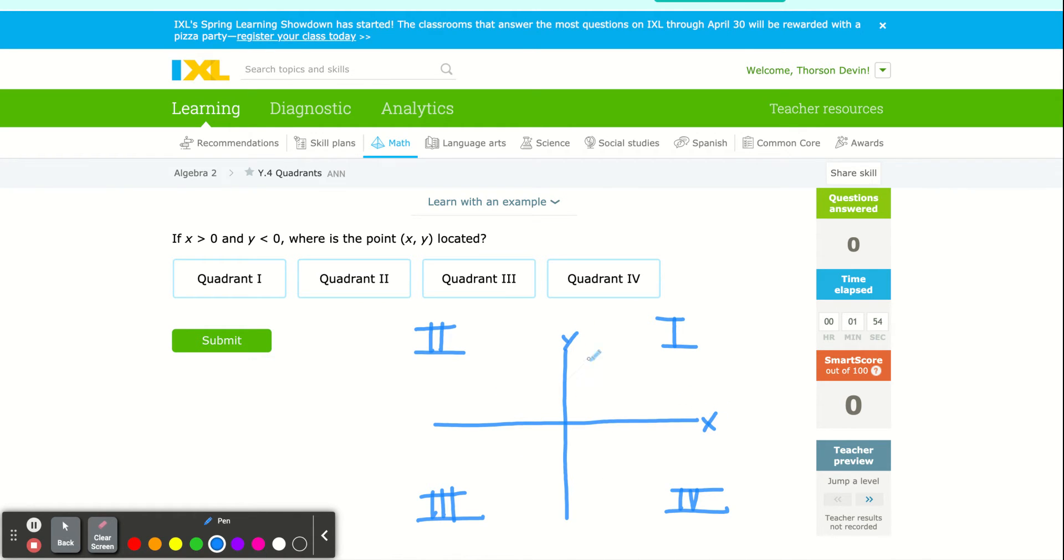What I mean by the four quadrants is we always label the top right quadrant as quadrant one, the top left quadrant as quadrant two, the bottom left is three, and the bottom right is four. So we go around counterclockwise, starting with the top right. One, two, three, four.